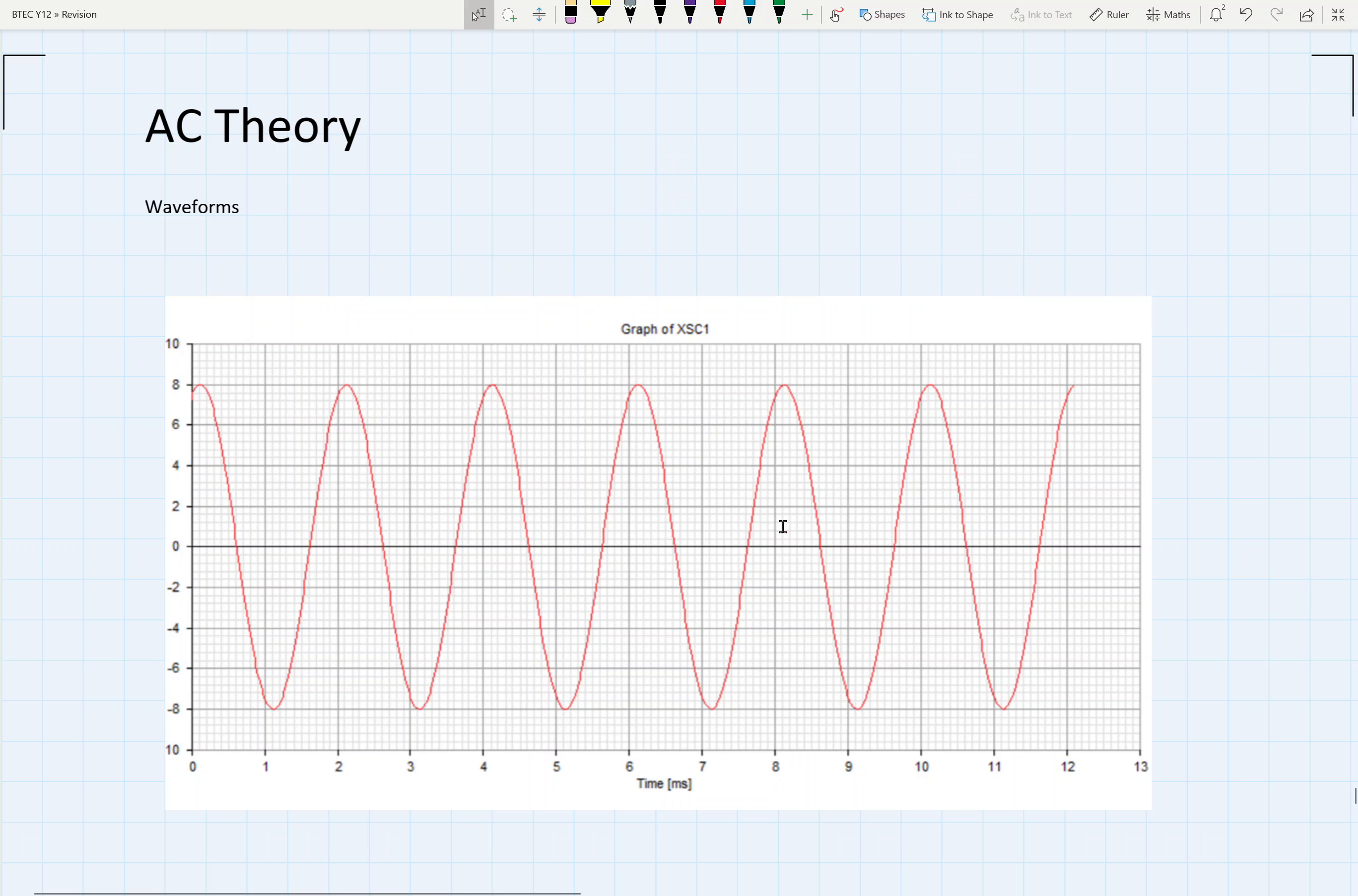So if we've got a waveform like this, then the first thing we want to do is define what the peak voltage is. The peak voltage is up from the center line, so from the 0 volt, so I'll just label that on there for us now. So there we have our peak voltage, and in this case, it's going to be equal to 8 volts.